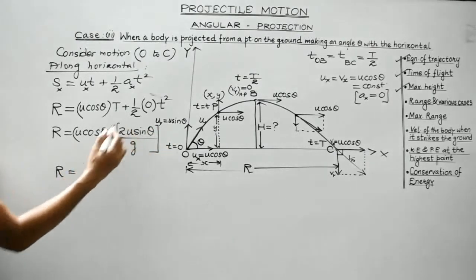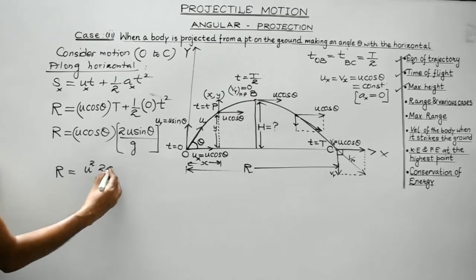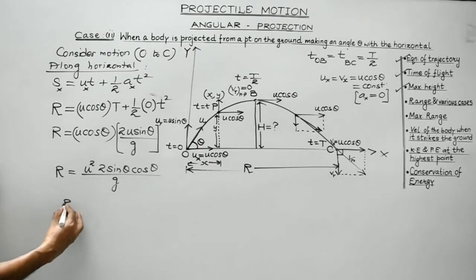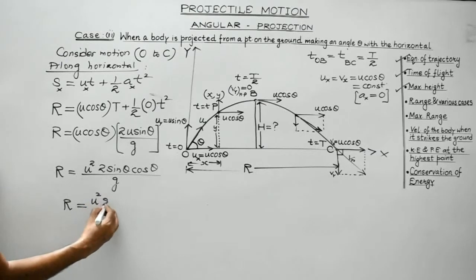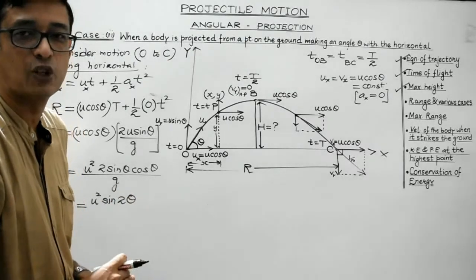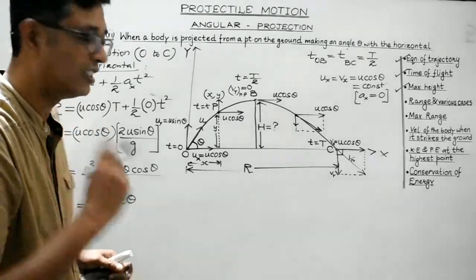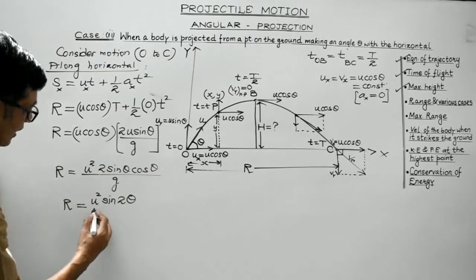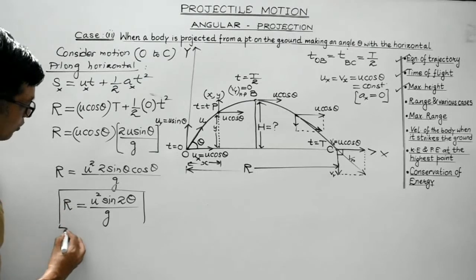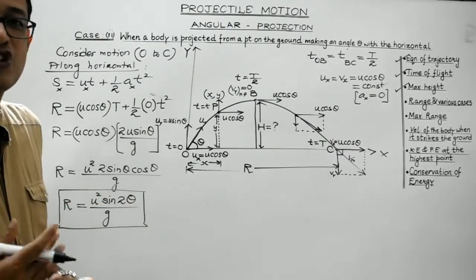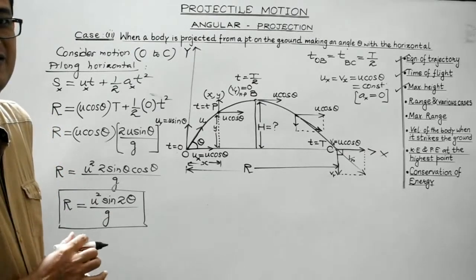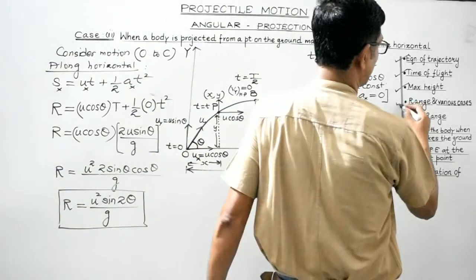Using the identity sin2θ = 2sinθ cosθ, the range R = u²sin2θ/g. This is the fourth important expression. The range of the projectile is R = u²sin2θ/g.